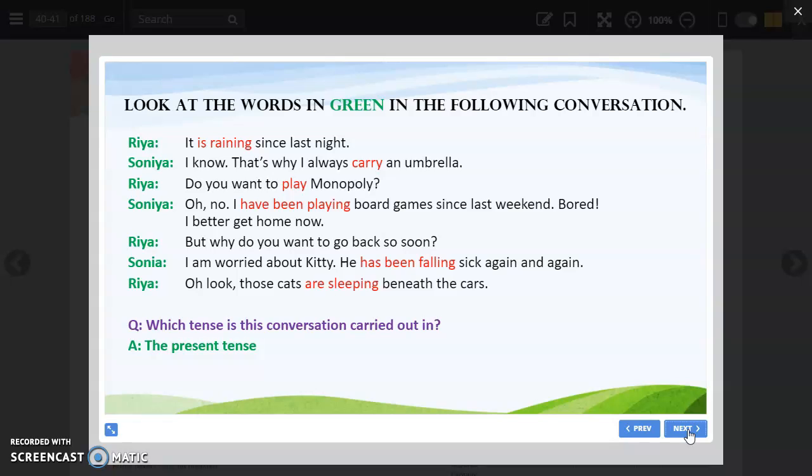Look at the words in green in the following conversation. Riya: It is raining since last night. Sonia: I know, that's why I always carry an umbrella. Do you want to play Monopoly? Sonia: Oh no, I have been playing board games since last weekend. Bored! I better get home now. Riya: But why do you want to go back so soon? Sonia: I am worried about Kitty. He has been falling sick again and again. Riya: Oh look, those cats are sleeping beneath the cars. So which tense in this conversation is carried out? It is present tense. When first sentence, Riya says it is raining, it is happening now.